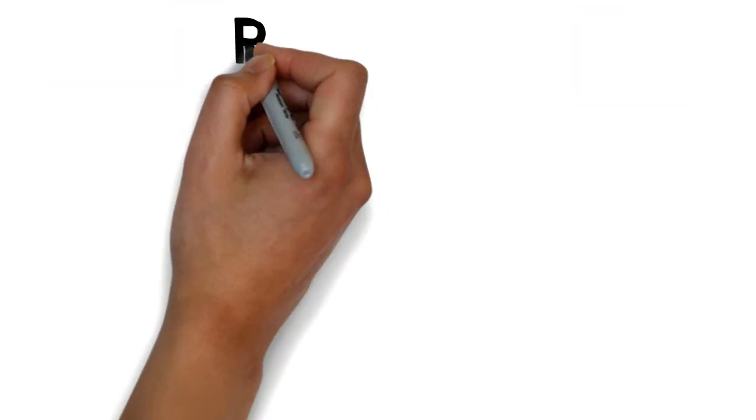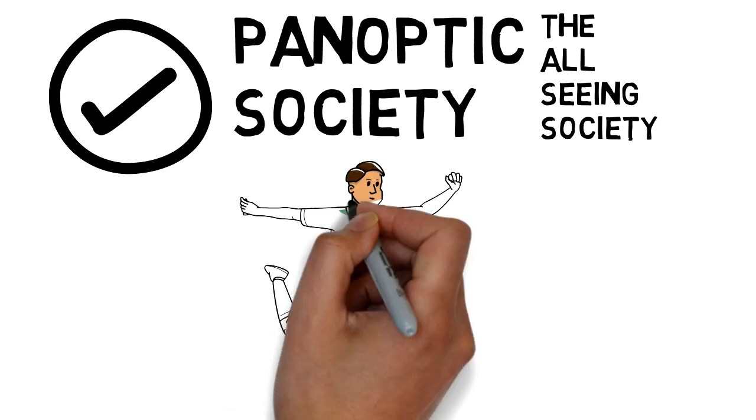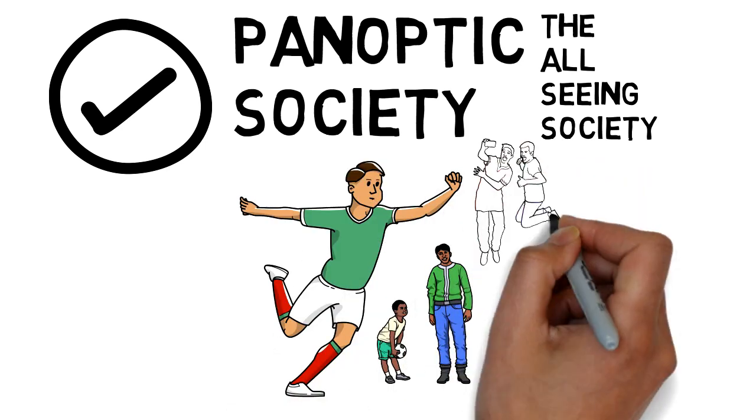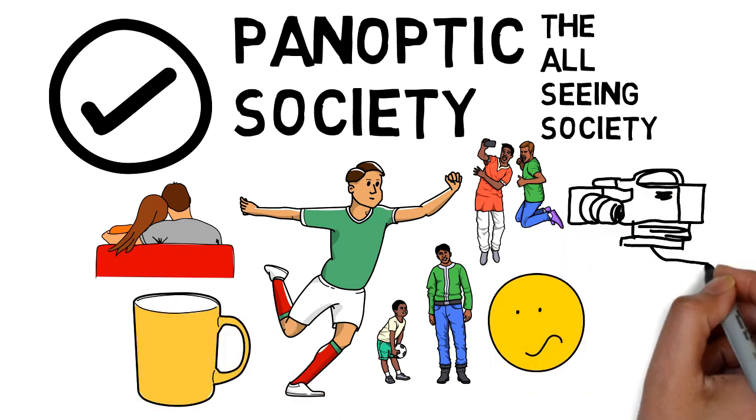And he said that, and this is what Foucault called the panoptic society, the all-seeing society. You will be on record recorded all the time. Everything you do, every facial expression you make, every time you fart, it's going to be analyzed by a computer in your home.